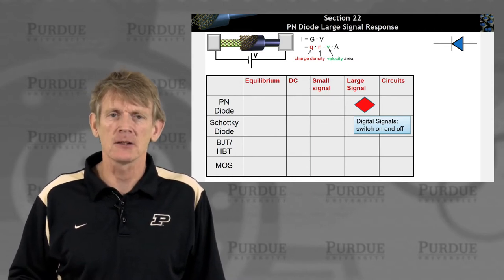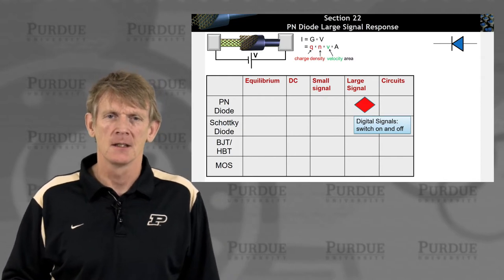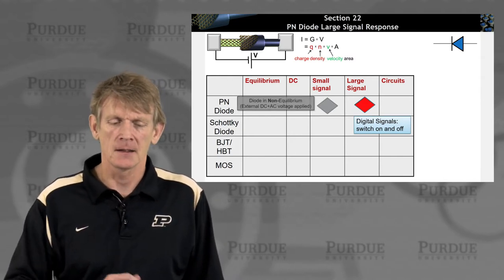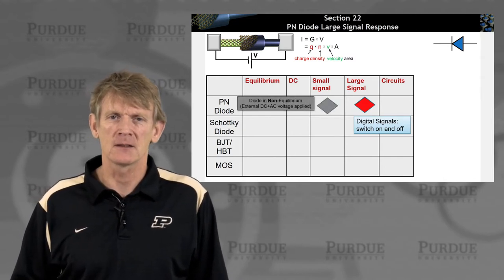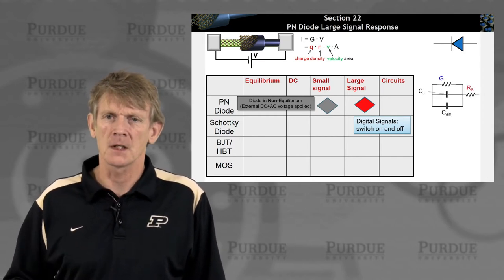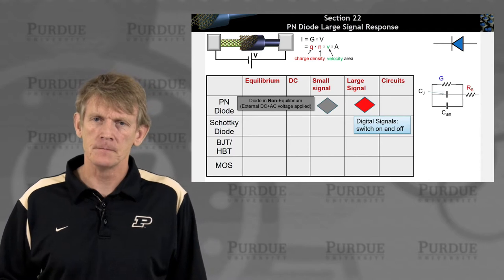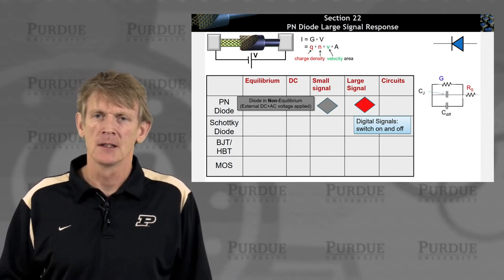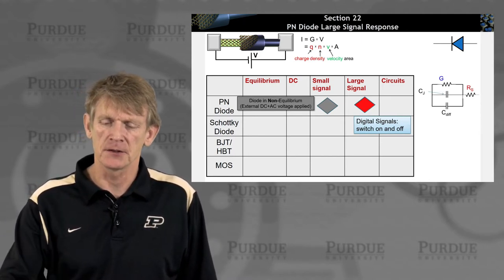We're going to look at digital switching of such devices. And in the last segment, we had looked at small signal AC response, where we derived an equivalent circuit model. And that equivalent circuit model consisted of a series resistance,